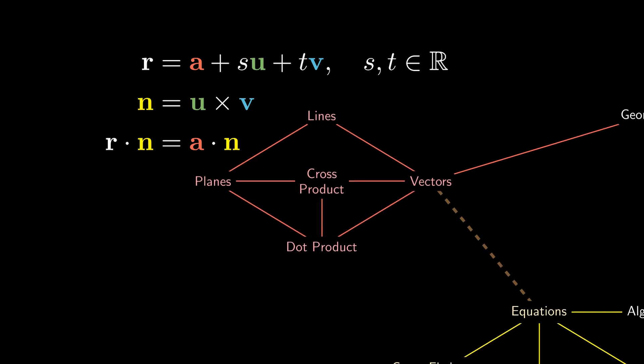We can even plug in the variable vector r with x, y, and z, and the constant normal vector n with a, b, and c. Doing a bit of algebra on the dot product, we obtain the cartesian equation of a plane. And in general, three planes give us a unique intersection, which can be used to solve equations.